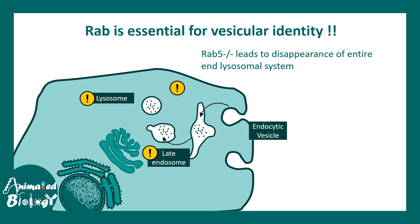RAB is really essential for vesicular identity, which is another important function. We already looked at the navigation function of RAB — helping a vesicle dock and tether to a specific membrane. But in an experiment where RAB5 was deleted, in the RAB5-null situation there was complete disappearance of the entire endolysosomal system. The endosome and lysosome became indistinguishable from any other vesicles — organelle identity was lost. That shows how important RAB is.